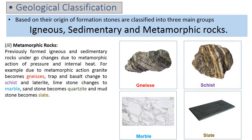Now let's discuss metamorphic rocks. Previously formed igneous and sedimentary rocks undergo changes due to metamorphic action of pressure and internal heat. For example, due to metamorphic action, granite becomes gneiss, trap and basalt change to schist and laterite, limestone changes to marble, sandstone becomes quartzite, and mudstone becomes slate.